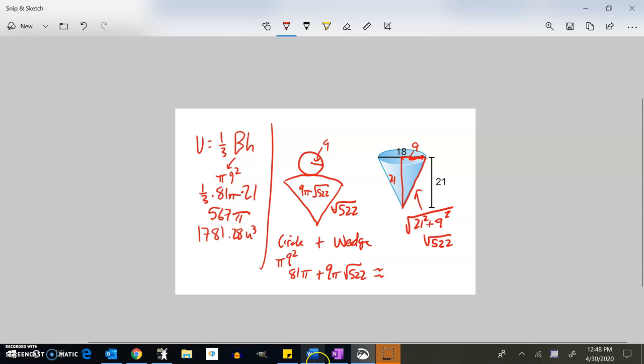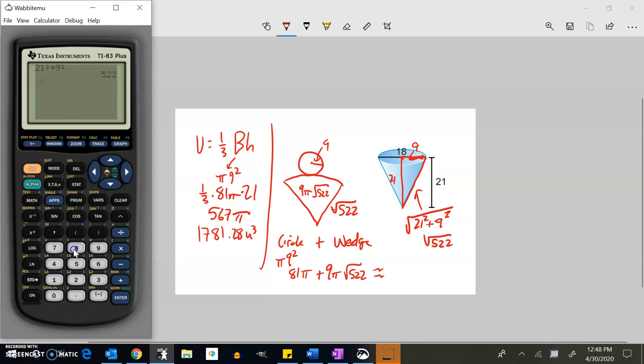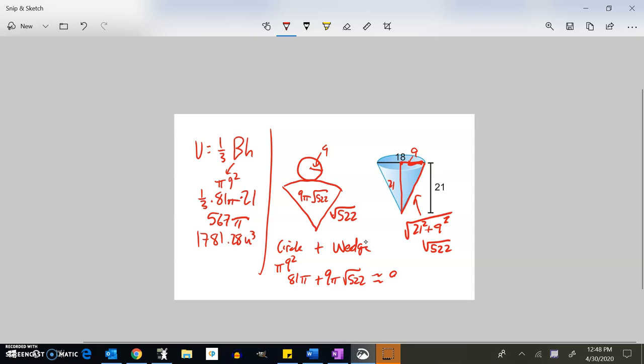So let me do that on my calculator and see what I get. So 81 pi plus 9 pi times the square root of 522. And I get about 900.46. And notice that that is unit squared. So there's my volume. There's my surface area for that lovely, lovely problem.